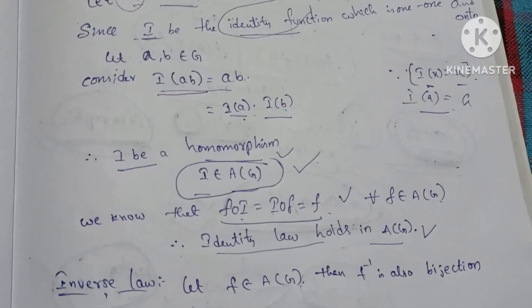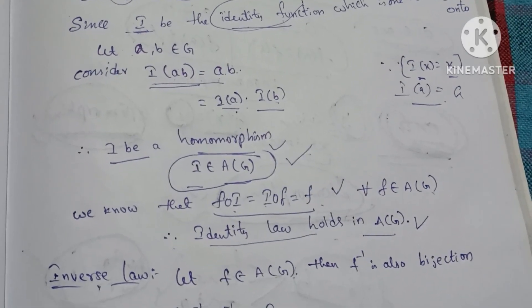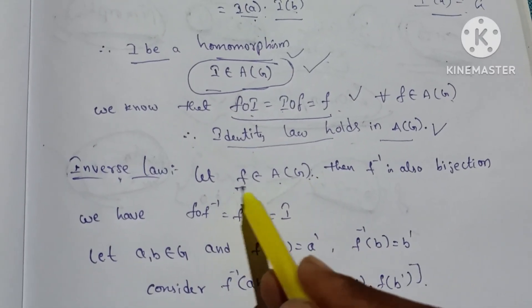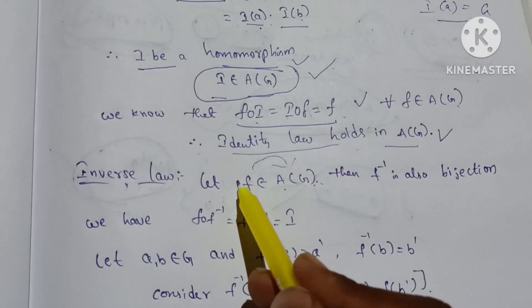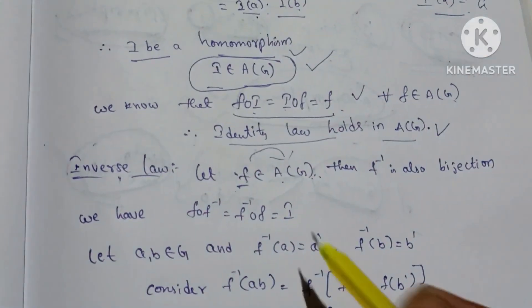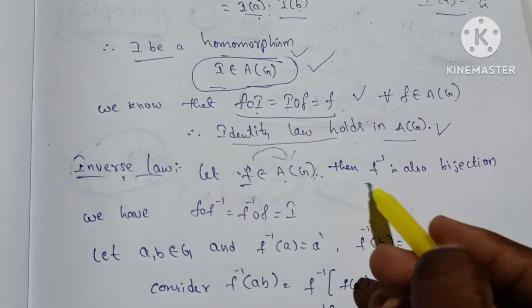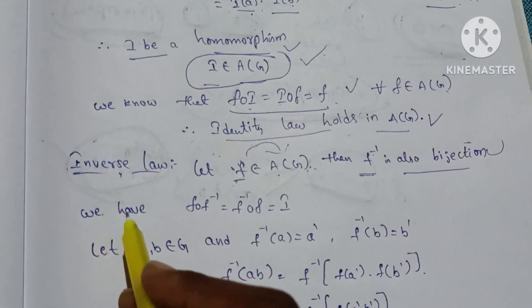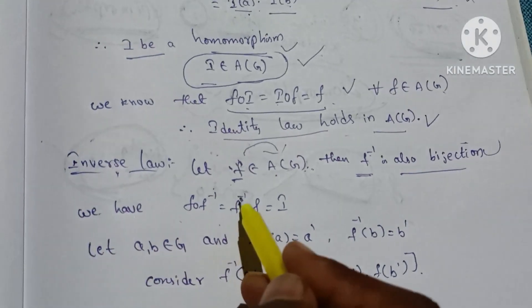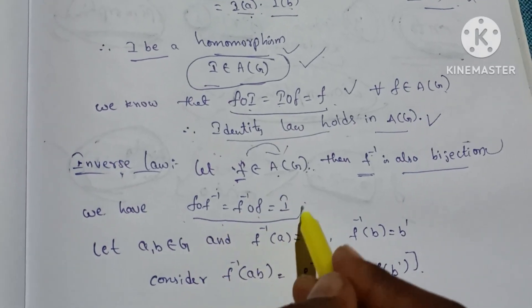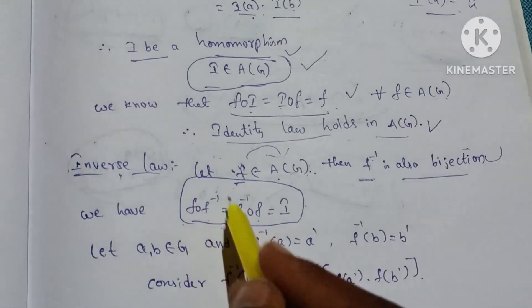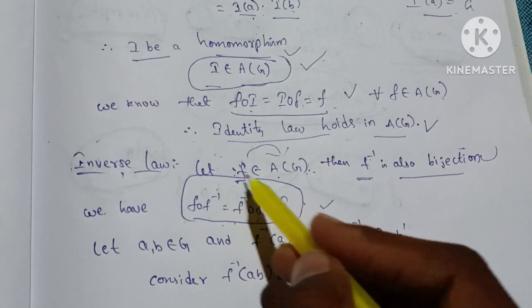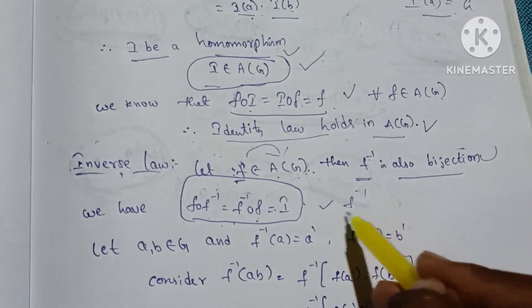The fourth law is the inverse law. Let F belong to A(G). We know that F circle F⁻¹ equals F⁻¹ circle F equals I. We have to prove this. We need to prove that F⁻¹ belongs to A(G), i.e., F⁻¹ is also an automorphism.